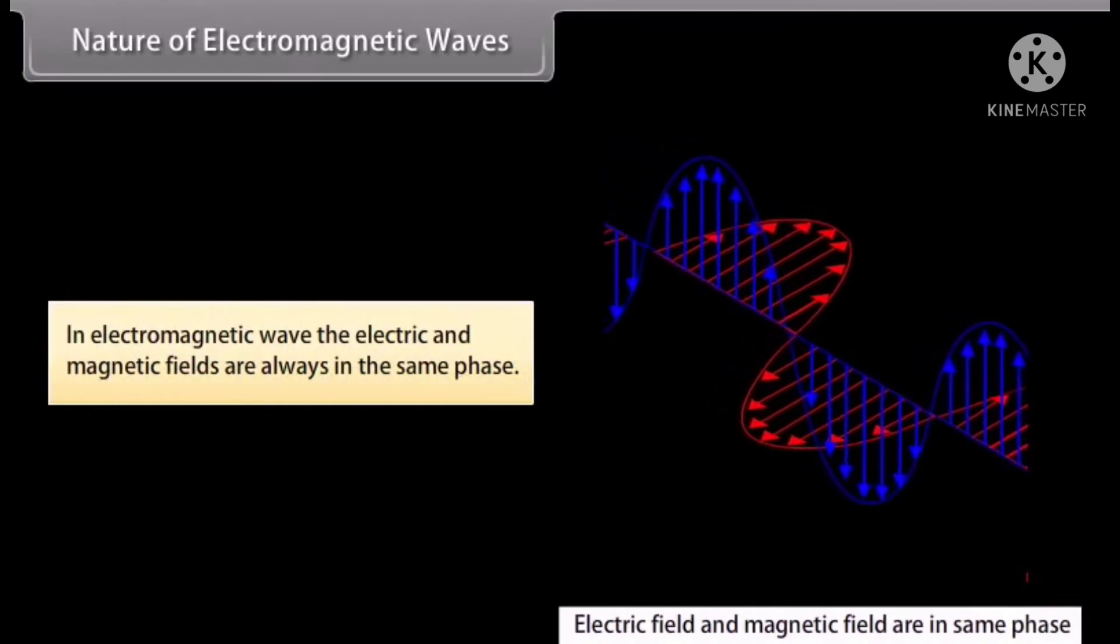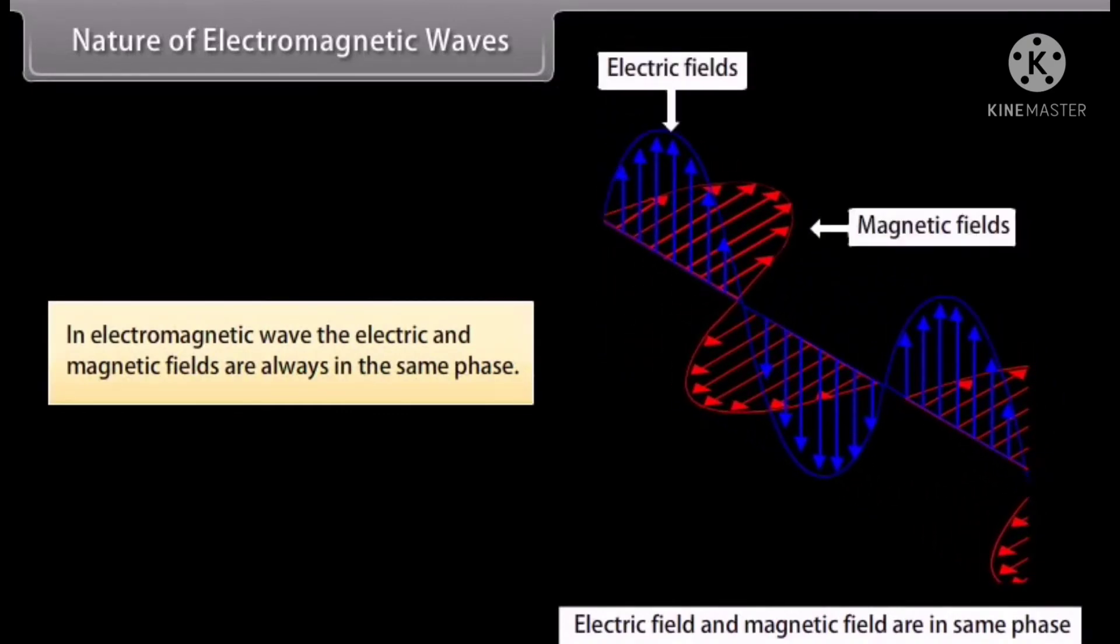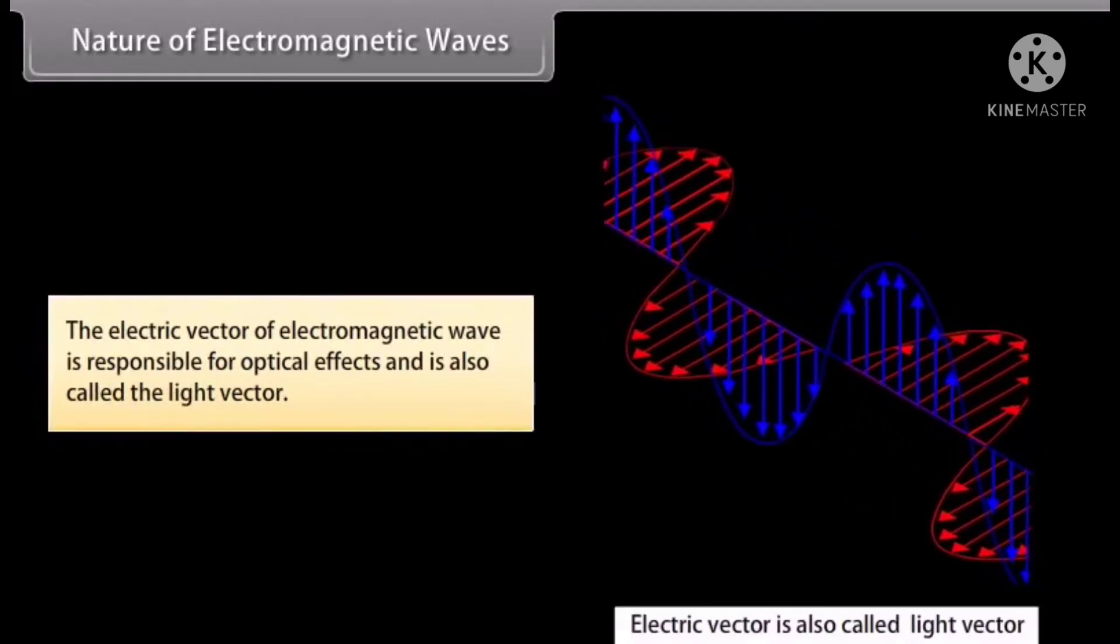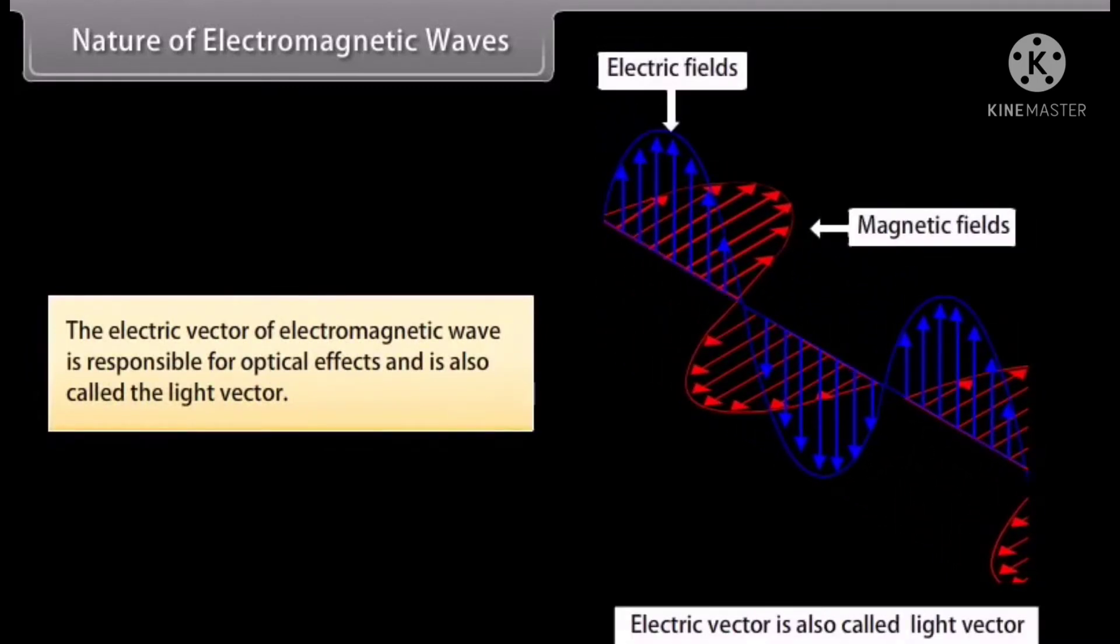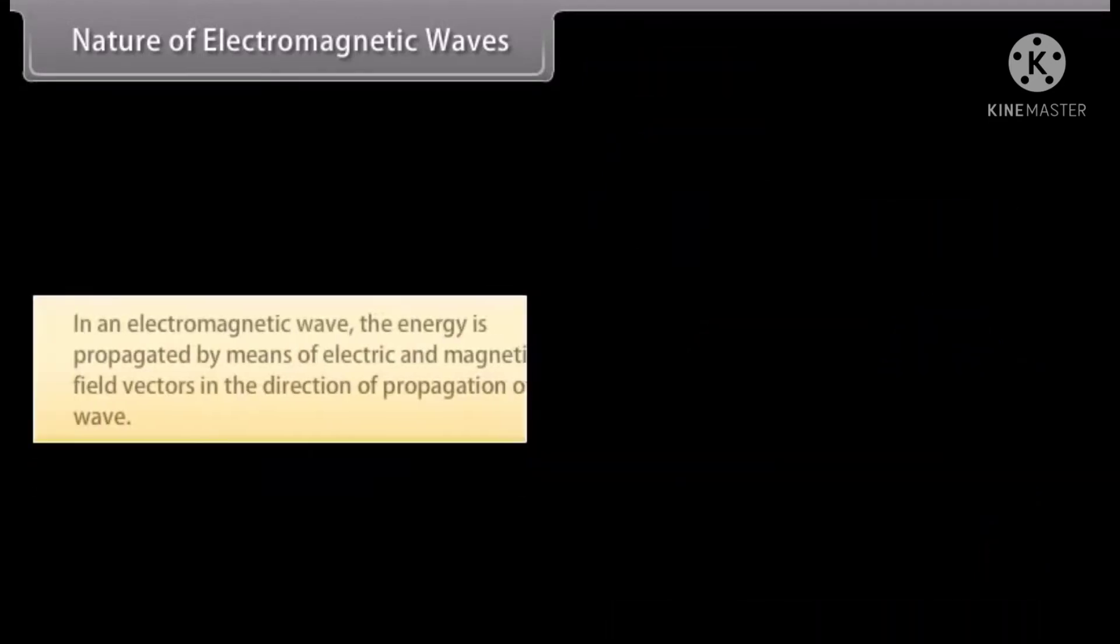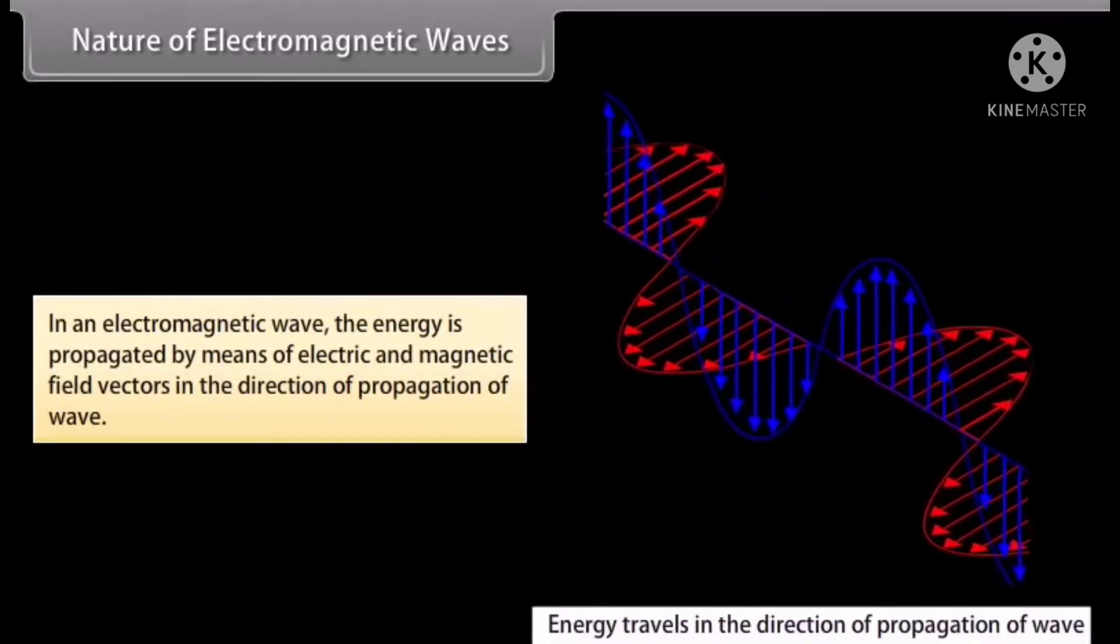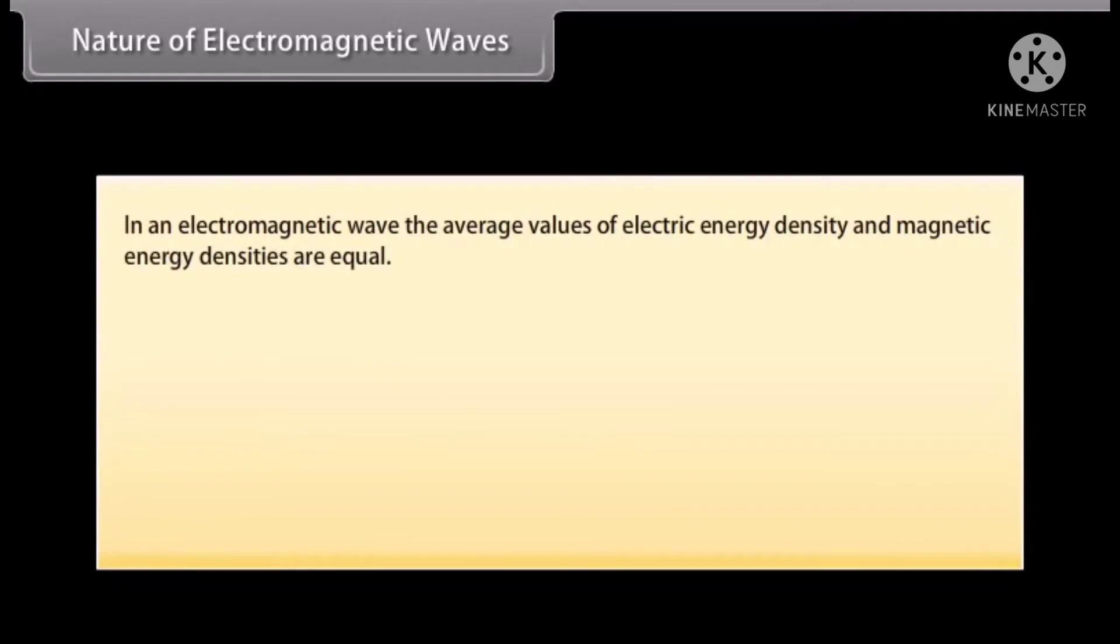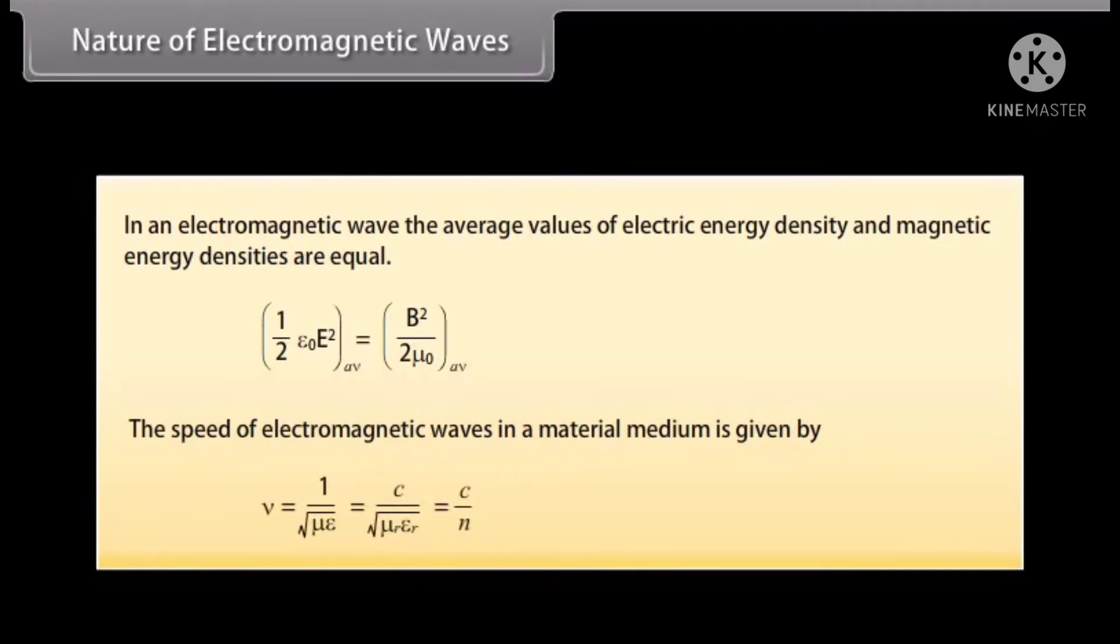In electromagnetic wave, the electric and magnetic fields are always in the same phase. The electric vector of electromagnetic wave is responsible for optical effect and is also called the light vector. In an electromagnetic wave, the energy is propagated by means of electric and magnetic field vectors in the direction of propagation of wave. The average values of electric energy density and magnetic energy densities are equal. The speed of electromagnetic waves in a material medium is given by the relation nu is equal to C upon n.